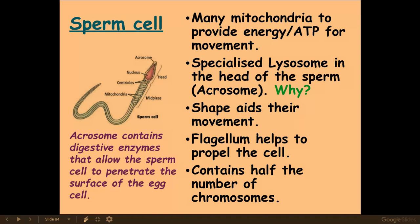Sperm cells also have a streamlined shape to aid their movement. They contain haploid genetics — half the genetic information. This is really important so that when they fertilize the egg, which is also haploid, they create a diploid zygote. Diploid means a full set of chromosomes, and a zygote is a newly fertilized egg — both taken directly from the mark schemes.